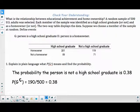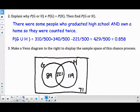You could also add up these three values of 221, 89, and 119 because the complement to being a high school graduate or a homeowner would be being neither. That's 71. That's why if you do 429 plus 71, you get 500. But your final answer is 85.8%.